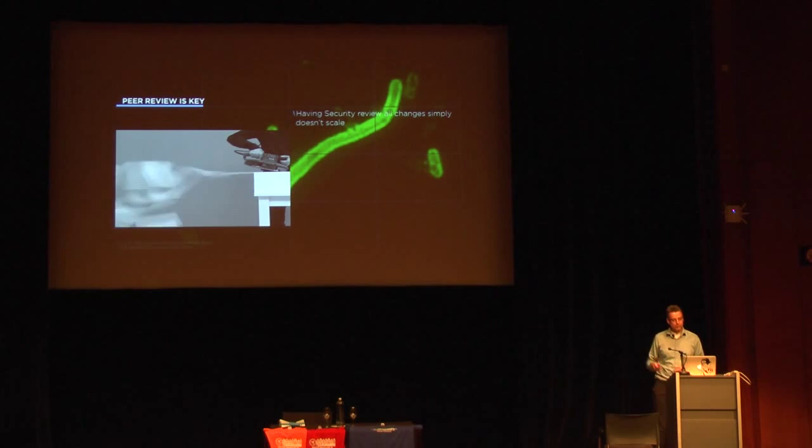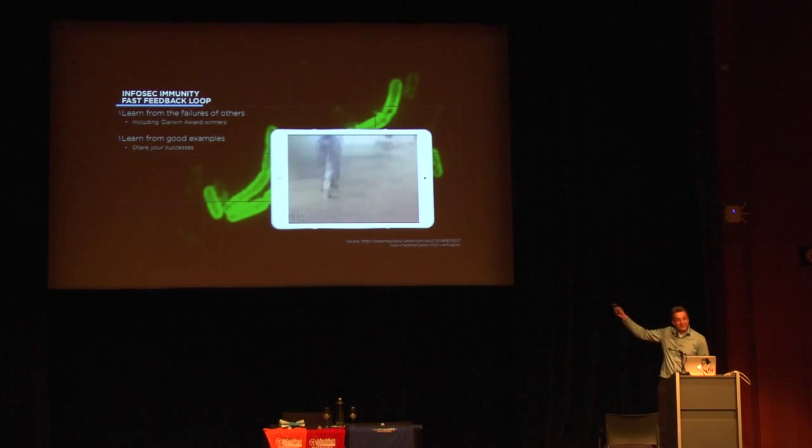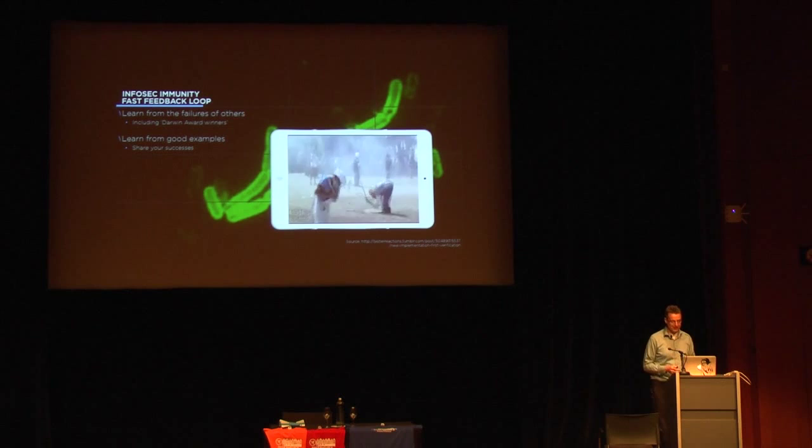Back to testing — that feedback loop needs to be tight. Learn from the failures of others: the Darwin Award is a great instrument for improving security. But also learn from good examples — visit conferences, develop methodologies that actually work.